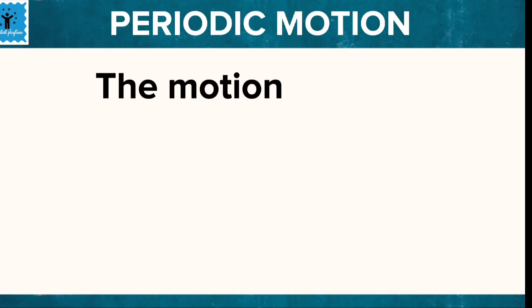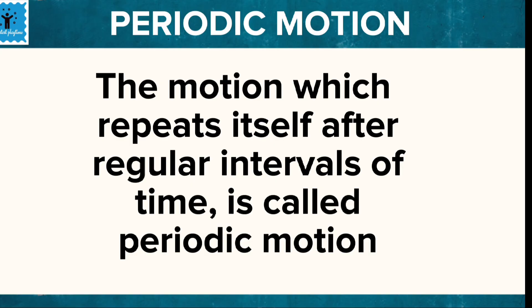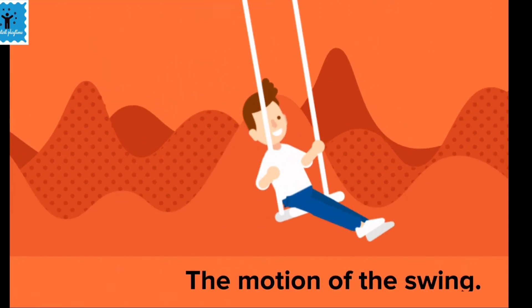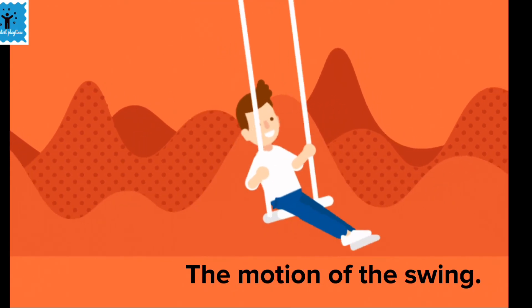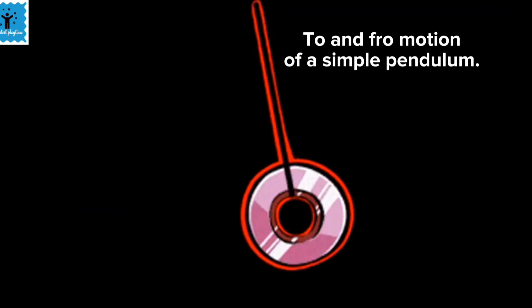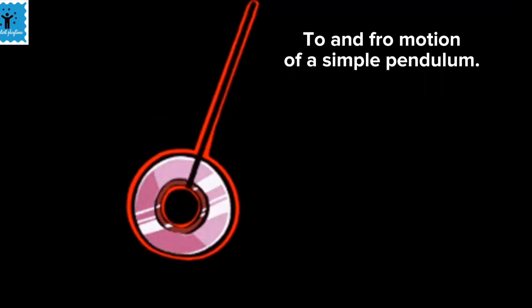The motion which repeats itself after regular intervals of time is called periodic motion. For example, the motion of a swing or the to and fro motion of a simple pendulum are examples of periodic motion.